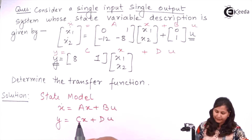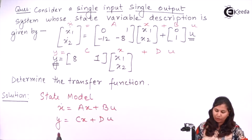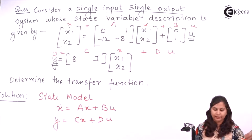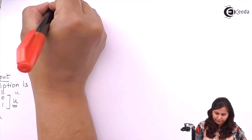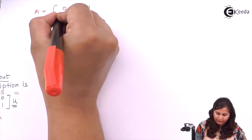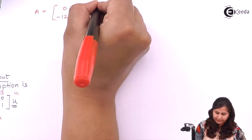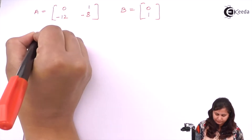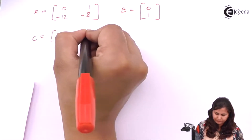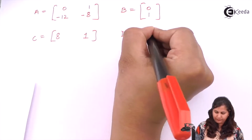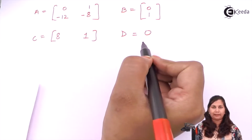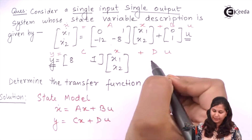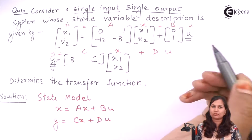By comparing these two equations with the given state model, we can find the values of the matrices A, B, C, and D. So A will be [0, 1, -12, -8]. These are the values of the A, B, C, D matrices. C is this matrix, and because D is not present, it is 0.